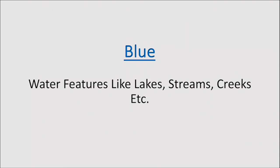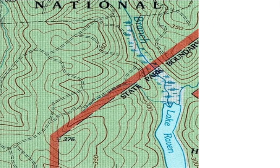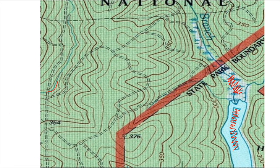Blue — again another self-explanatory color. It designates water features like lakes, streams, and creeks. So over here, Lake Raven is in blue. We have some marshland here in blue, and then we have a little creek and stream running right through here.